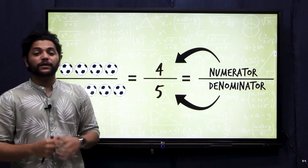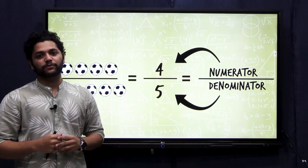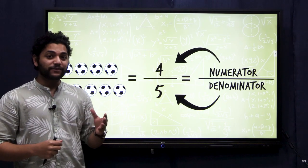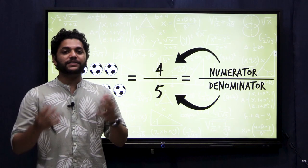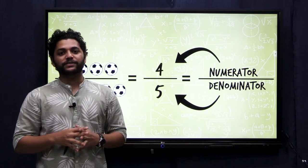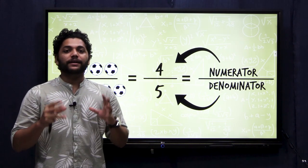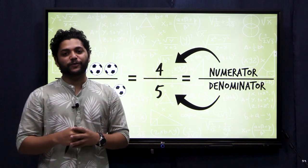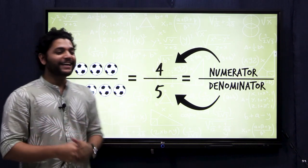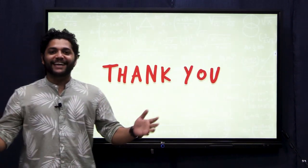I am sure you are clear with what fractions are and how we represent them. The number above is the numerator and below is the denominator. There are different types of fractions — mixed fractions, proper fractions, improper fractions, and many more — which we will learn in the next video. Till then, have a good time and thank you.